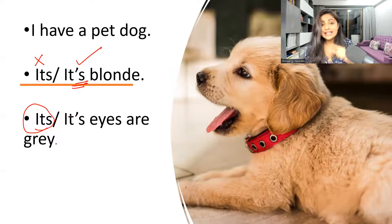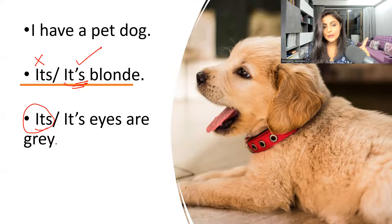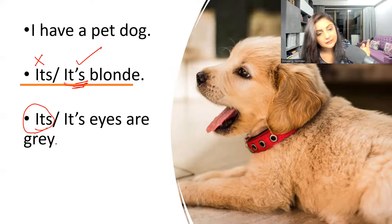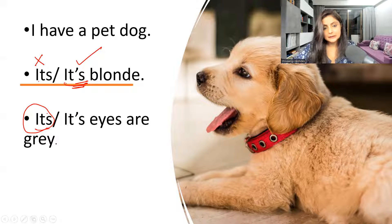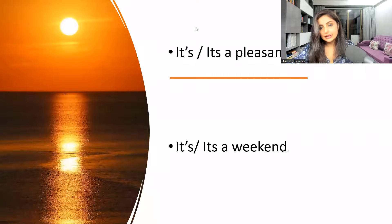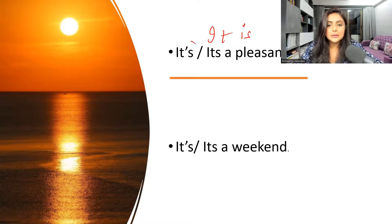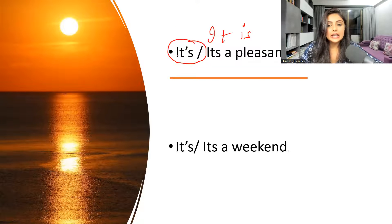So to summarize: 'I have a pet dog — it's blonde' uses the apostrophe because it means 'it is blonde.' When I say 'its eyes are gray,' indicating possession, I use 'its' without an apostrophe. Another example: 'It's a pleasant morning' — I'm saying 'it is a pleasant morning,' so 'it's' with an apostrophe — a contraction — is absolutely correct.